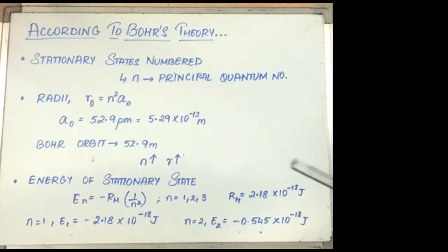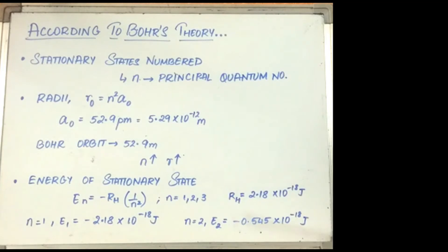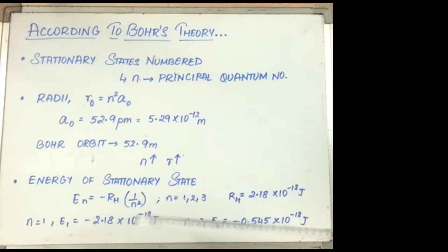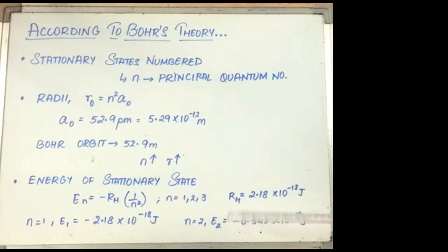The most important property is the energy of the stationary state. The expression is: E_n equal to minus R_H times (1/n²), where n equals 1, 2, 3. R_H is equal to 2.18 × 10⁻¹⁸ joules, also known as the Rydberg constant. The energy of the lowest state — the ground state, n equal to 1 — is minus 2.18 × 10⁻¹⁸ joules. For n equal to 2, E₂ is equal to minus 0.545 × 10⁻¹⁸ joules.